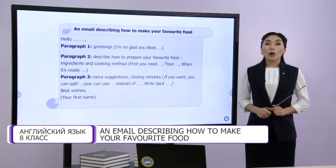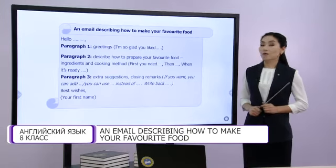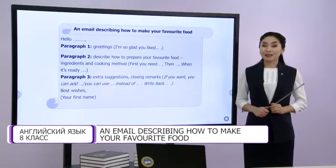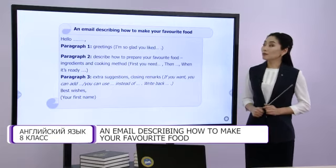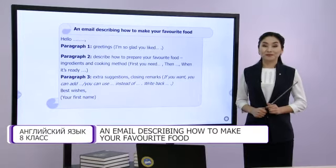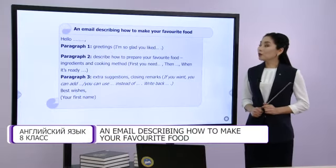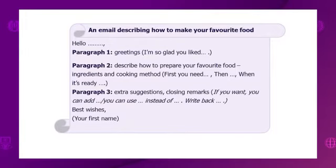Now, students, we are going to improve our writing skills. So, how to write an email describing how to make your favourite food? Please listen and be ready to make notes. First, greet your friend. Then, in paragraph one, write greetings. For example: I am so glad you liked the name of the dish. In paragraph two, describe how to prepare your favourite food — ingredients and cooking methods. Don't forget to use appropriate linking words. In paragraph three, write extra suggestions and closing remarks. And after that, best wishes and your first name.